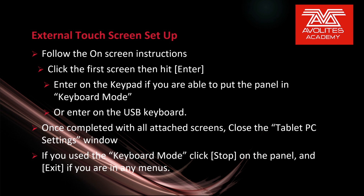Then follow the on-screen instructions. Click the first screen and then hit Enter. Use Enter on the keypad if you are able to put the panel in keyboard mode, or just press Enter on your USB keyboard. Once completed with all attached screens, close the Tablet PC Settings window. If you use keyboard mode, click Stop on the panel and then click Exit if you are in any menus.